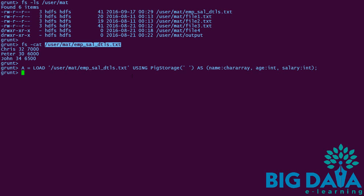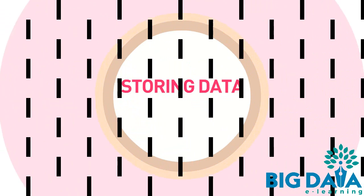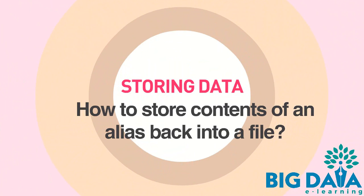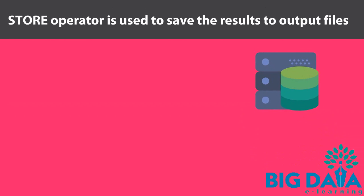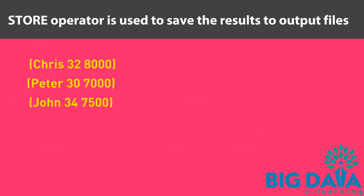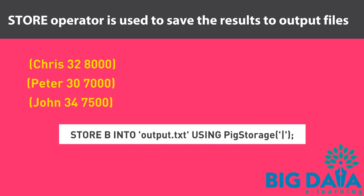Now let's see how to store the modified data into an HDFS file. Storing data — how to store contents of an alias back into a file. The Store operator is used to save the results to output files. For example, after performing operations in PIG, say the salary from our previous example is incremented by $1,000 for each tuple and is in an alias B. The contents of alias B can be stored into a file using the store operator. This will persist the results in the file system. Remember, the contents of the alias will only be available during that PIG session; however, once you store it into a reliable file system like HDFS using the store command, it will persist permanently.